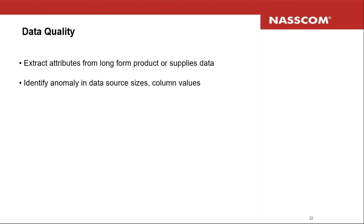Similarly for data quality: you can extract attributes from long-form products or supplies data and tag it properly. You can identify anomalies — for instance, a data source that normally sends 10,000 records incrementally suddenly sends only 1,000, or a column whose values were always between zero and ten suddenly starts showing 999. An AI system can flag these anomalies and patterns because humanly going through all those combinations and building rules becomes really difficult.